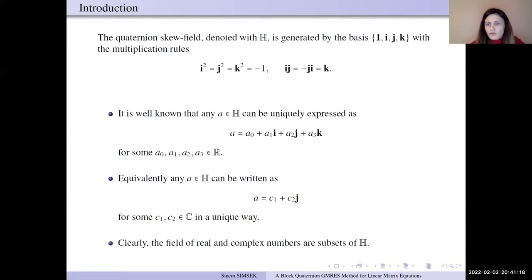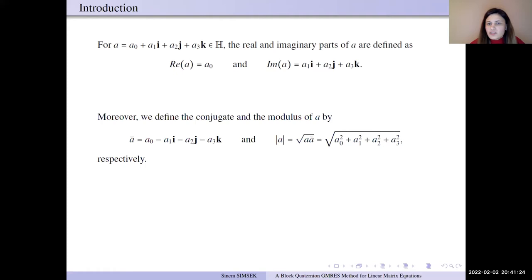For quaternion numbers, the real and the imaginary part are defined as a0 and the imaginary part is the vector part. Moreover, we define conjugate, the quaternion numbers. The conjugate quaternion numbers has opposite signs of vector part. And the norm of quaternion is the multiplication of a and conjugate a.